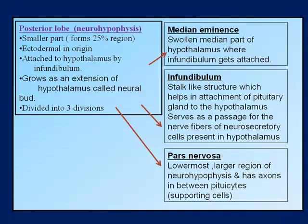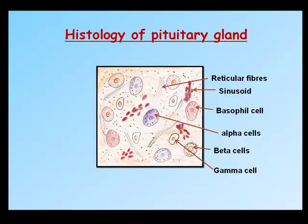Pars intermedia is a narrow cleft between pars distalis and pars nervosa; it is vestigial or non-functional in humans. The posterior lobe (neurohypophysis) forms 25% of the region, is ectodermal in origin, and is attached to the hypothalamus by the infundibulum. It grows as an extension called the neural bud. Its three divisions are: the median eminence (swollen median part of hypothalamus), the infundibulum (a stalk-like passage for nerve fibers of neurosecretory cells), and pars nervosa (the lowermost larger region containing axons and pituicytes).